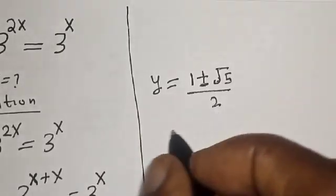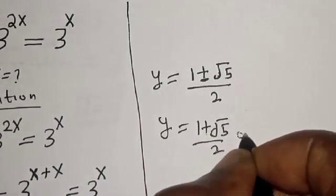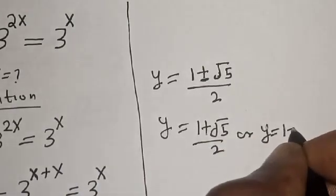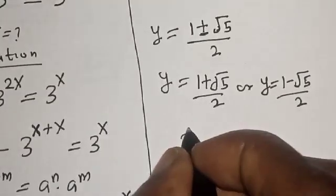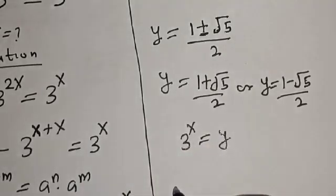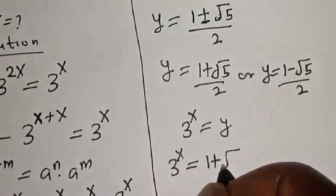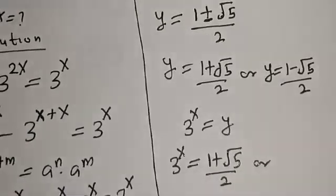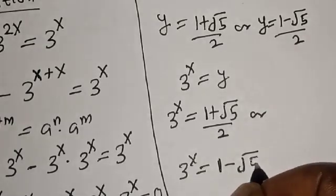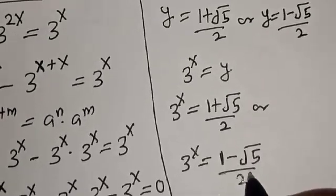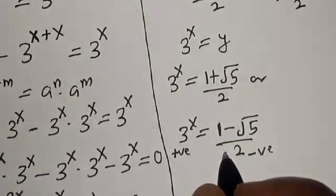So y is equal to 1 plus or minus square root of 5, over 2. Therefore y is equal to 1 plus root 5 over 2, or y is equal to 1 minus root 5 over 2. But remember that 3 raised to power x is equal to y. Therefore 3 raised to power x equals 1 plus root 5 over 2, or 3 raised to power x equals 1 minus root 5 over 2. But the second value is negative, so it is rejected.